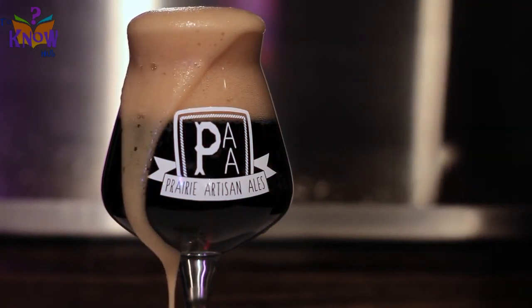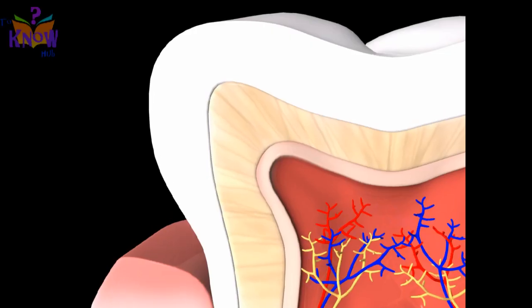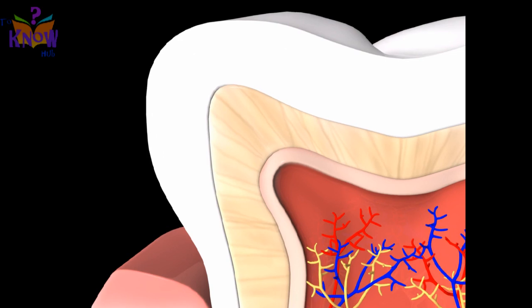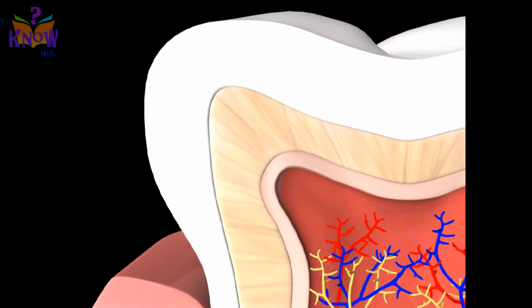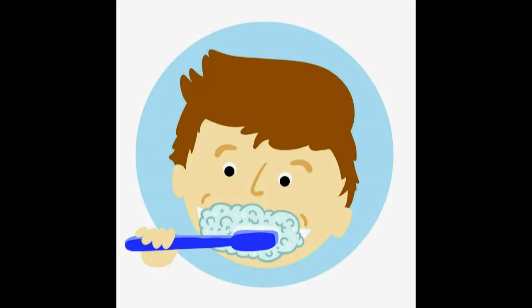Dentine has many microscopic tubules. That is why pulp responds to external temperature or chemical changes very easily once the enamel wears away — that is, after the enamel decays. So take care of your enamel.